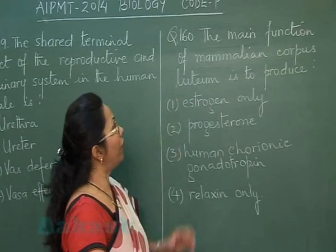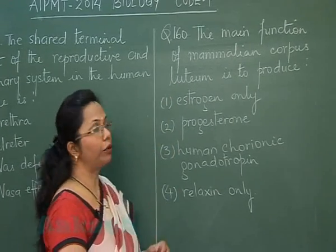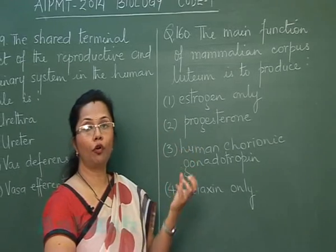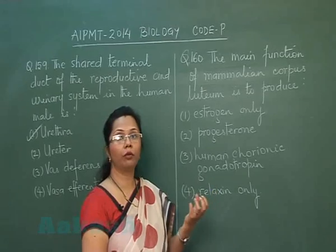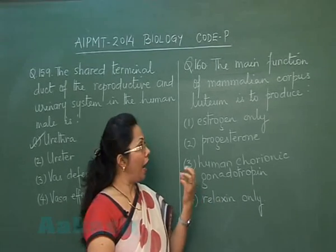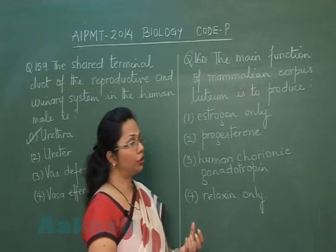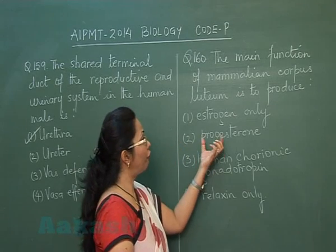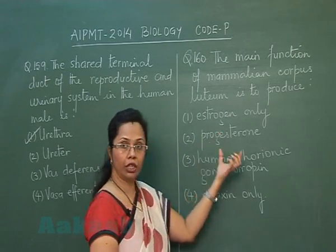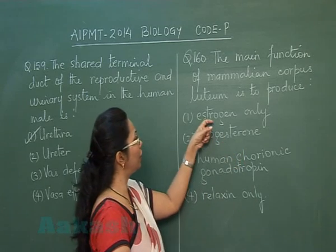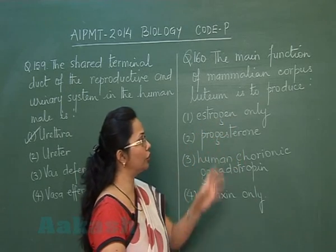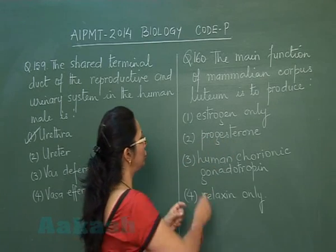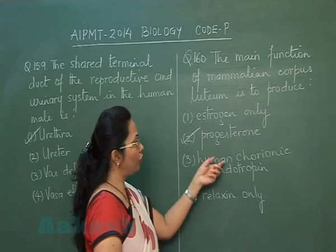Question 160: The main function of the mammalian corpus luteum is to produce which hormone? The corpus luteum is formed after ovulation from the ruptured follicle. It is an endocrine structure that secretes large amounts of progesterone. It also secretes estrogen, but since estrogen alone is given as an option, that cannot be the best choice — the answer is progesterone.